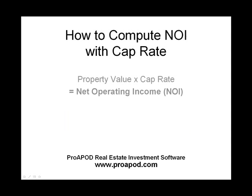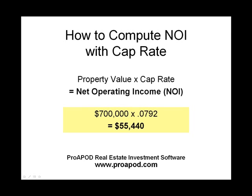Finally, you can compute a property's NOI by multiplying its value by its cap rate. For example, a property selling for $700,000 claims to have a cap rate of 7.92%. You multiply its value by its cap rate and in this case you should expect to find that the property generates a net operating income of $55,440.